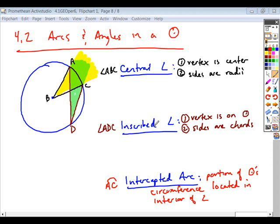We also talked about the relationship between these angles, and that is with a central angle. The measure of your central angle ABC is exactly equal to the measure of your arc AC.